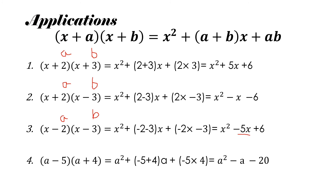In the last example, (a minus 5)(a plus 4), the only difference is that the variable is a instead of x. The first term is the square of the variable, which is a square. Then a is minus 5 and b is 4, so minus 5 plus 4 into the variable a gives minus 1a, and ab is minus 5 into 4 which is minus 20. The answer is a square minus a minus 20.